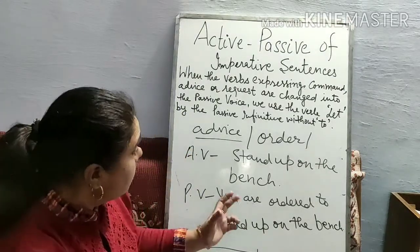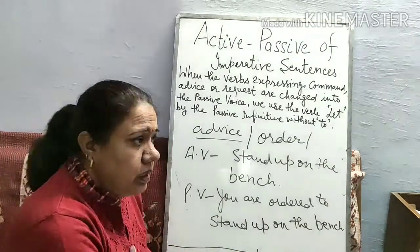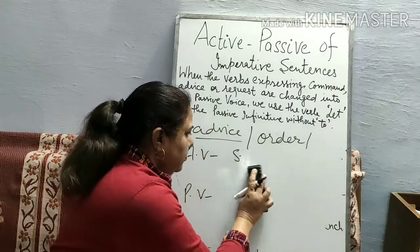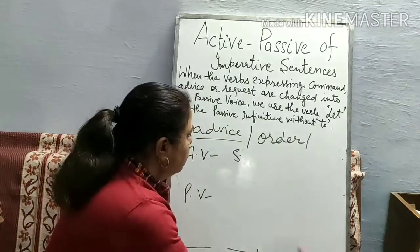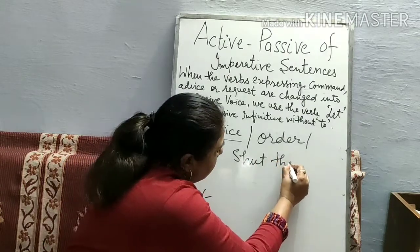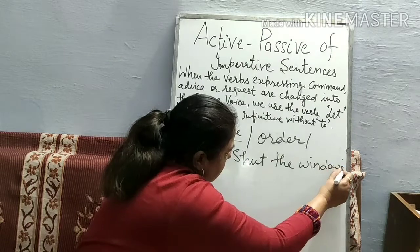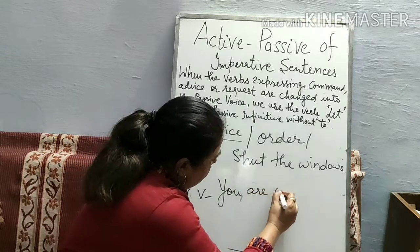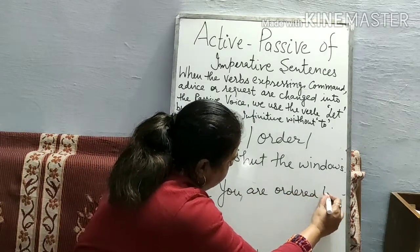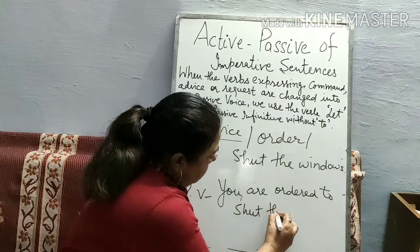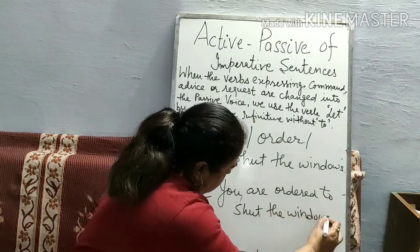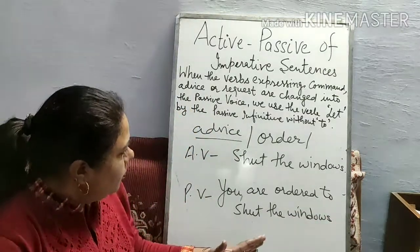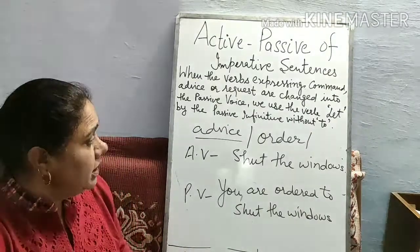Next example — somebody is ordering: 'Shut the windows.' The passive voice will be: 'You are ordered to shut the windows.' Here this topic ends. I hope you have understood imperative sentences in active and passive voice. Thank you.